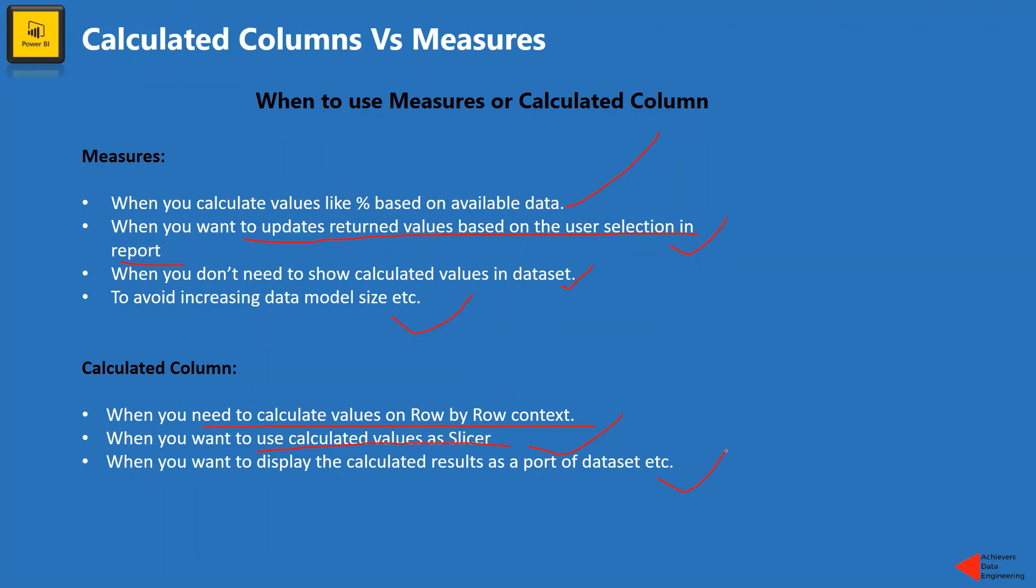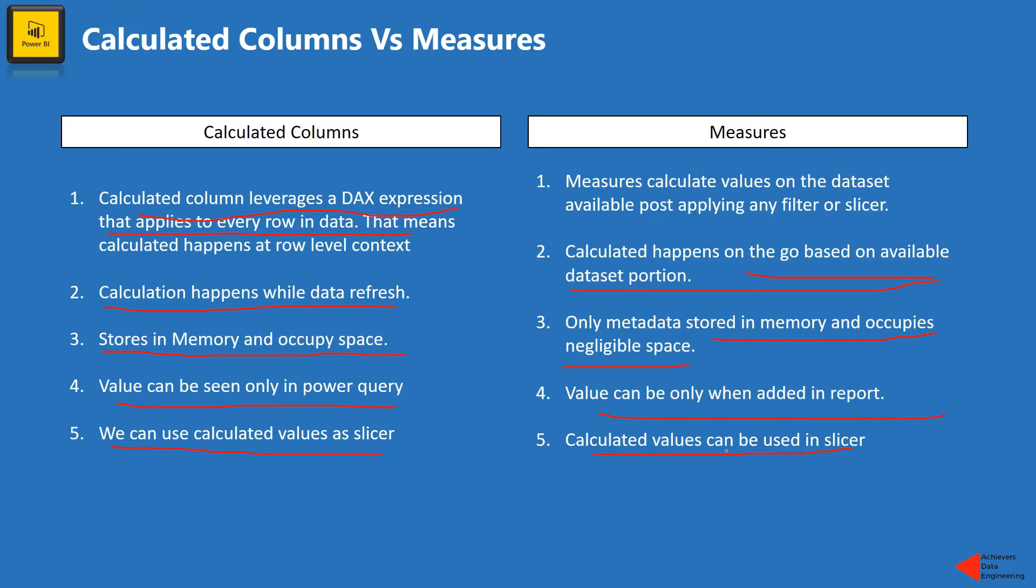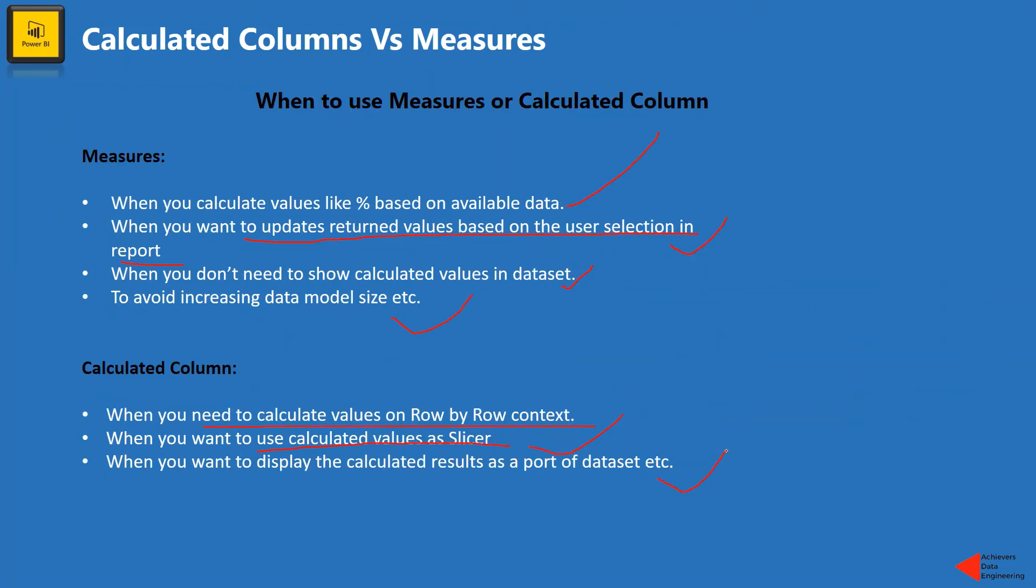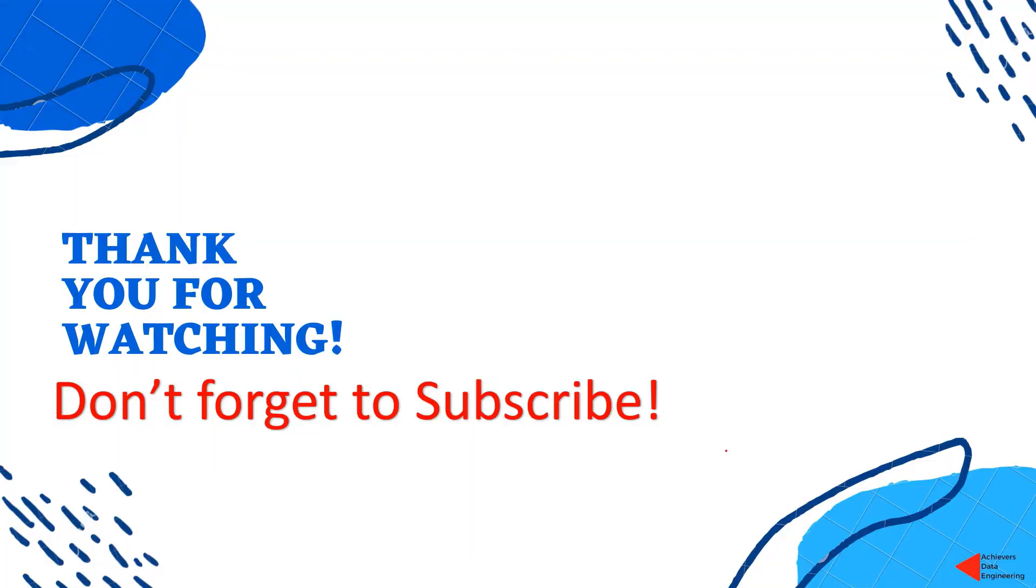Now, these are very basics or sample or kind of random examples that I have put in here. There might be some other options or other scenarios as well, where you should either go for measures or calculated columns. So it's just kind of a limited information that I have provided you here. However, I hope you have got enough understanding what is the difference between calculated columns and measures and where should you use either calculated column or a measure in your Power BI report. So if you like the content, if you consider the content was knowledgeable, then please go ahead and like this video. And please don't forget to subscribe my YouTube channel to stay up to date on any latest video that I upload. Thank you for watching. Keep learning. Have a great day.